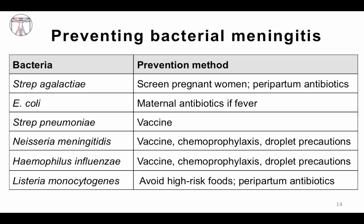To summarize bacterial meningitis prevention: for group B strep, we screen pregnant women and give peripartum antibiotics. For E. coli in neonates, maternal antibiotics are given for fever. For strep pneumo, vaccination is key. For Neisseria meningitidis, prevention involves vaccines, chemoprophylaxis, and droplet precautions. The same applies for H. flu. For Listeria, avoiding high-risk foods and giving peripartum antibiotics when infection is suspected in mother or infant are the primary strategies.